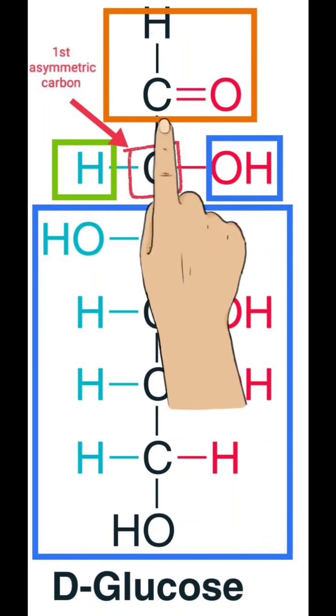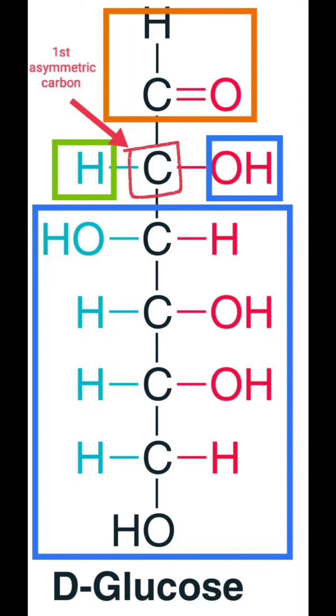The first carbon of glucose is not asymmetric because out of the four bonds, two bonds are formed with oxygen. So it becomes symmetric.